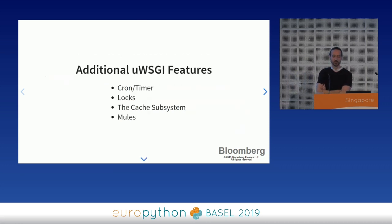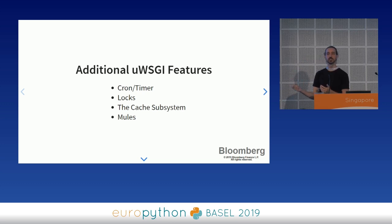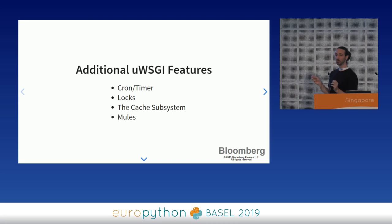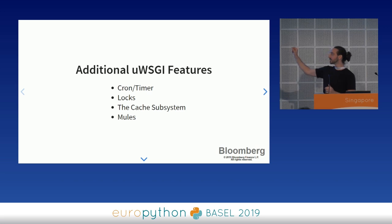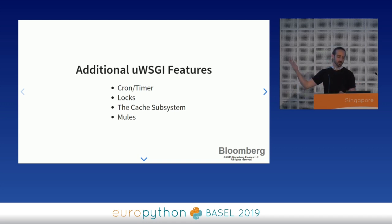The last section is additional UWSGI features. This is a controversial section because if you use any of these, you lose compatibility with other WSGI hosts — you can no longer switch back to Gunicorn. That said, it can still be worth doing. Once a system is in production, we don't switch hosts that often. These features can help you solve problems with much less complexity than you otherwise could, trading a reduction in complexity for interchangeability of your WSGI host.